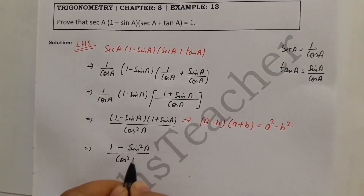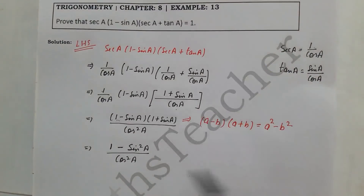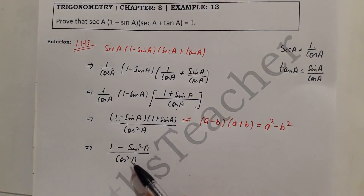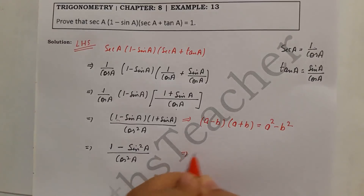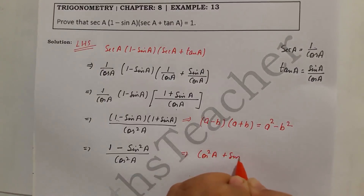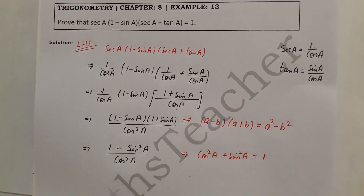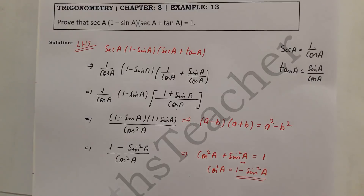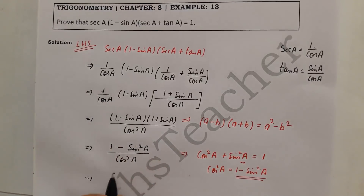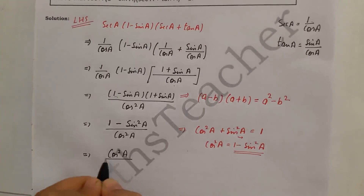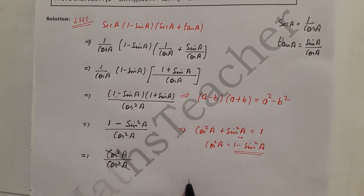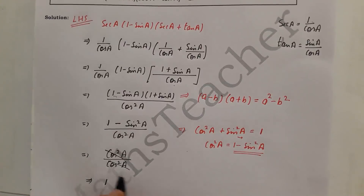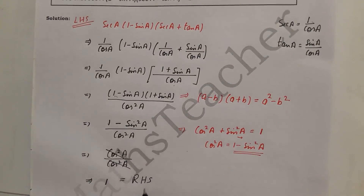In the denominator we have cos squared a. Now we use the identity cos squared a plus sin squared a equals 1, which means 1 minus sin squared a equals cos squared a. So we substitute: the numerator becomes cos squared a and the denominator is cos squared a. This implies cos squared a over cos squared a, which equals 1. This is our right hand side — proved.